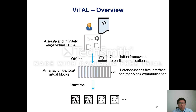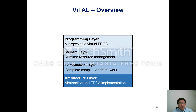To support scale-out acceleration, VITAL provides a latency-insensitive interface for inter-board communication. Applications can be partitioned at virtual block boundaries and deployed onto multiple FPGAs. VITAL contains four layers to realize this functionality: the programming layer, the system layer, the compilation layer, and the architecture layer.